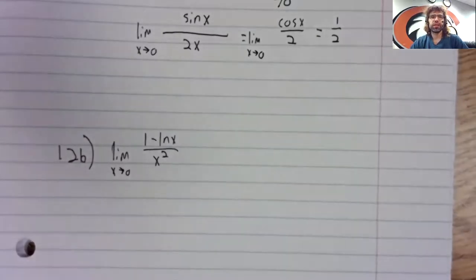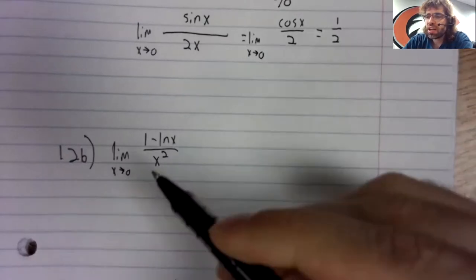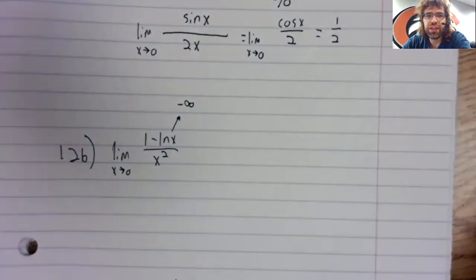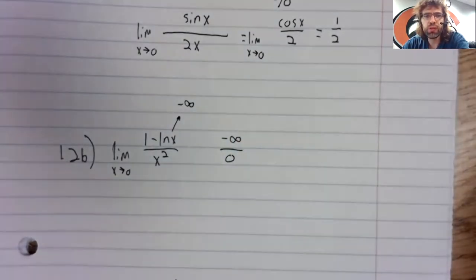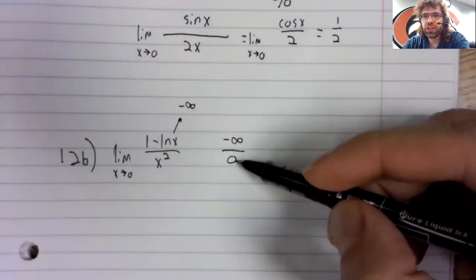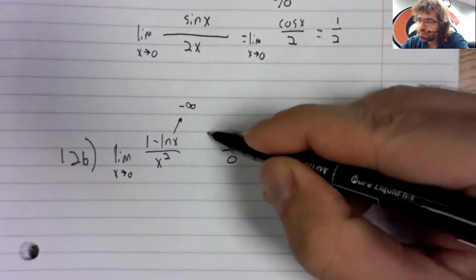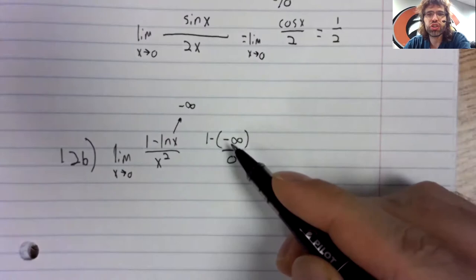12b. The trick here, and again, it's not like I'm really trying to trick people. But as x goes to zero, the natural log goes to negative infinity. And negative infinity over zero is not an indeterminate form.